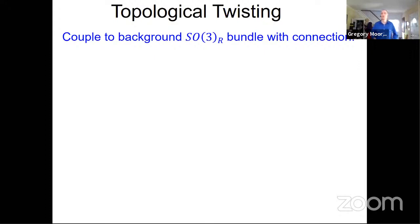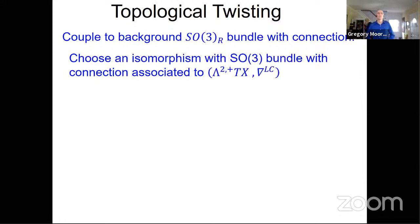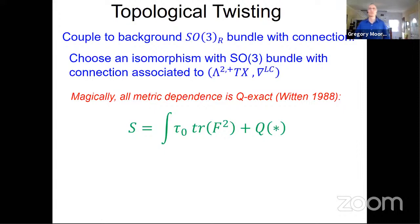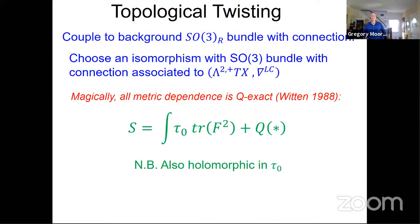The topological twisting is standard. We couple to a background R-symmetry bundle with connection for the SO(3) R-symmetry, and choose an isomorphism with the SO(3) bundle associated to the self-dual two-forms on X with the Levi-Civita connection. Then magically all the metric dependence becomes Q-exact, so the action looks like tau naught times trace F-squared plus metric-dependent Q-exact terms. At least formally, Q-symmetry says the partition function should be metric independent and holomorphic in tau naught, and we'll see that's sometimes true and sometimes not.